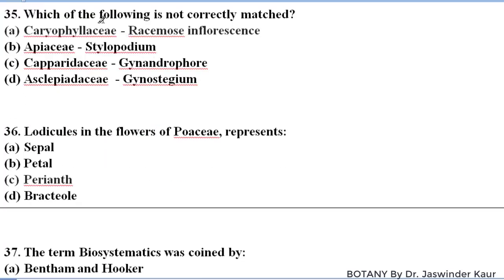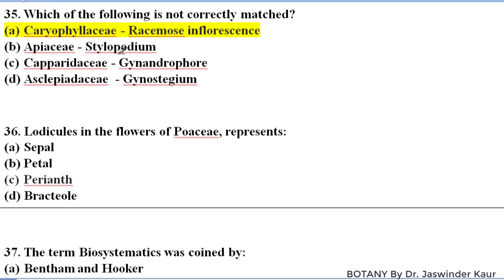Which of the following is not correctly matched? Caryophyllaceae with racemose inflorescence is incorrect, because in Caryophyllaceae cymose inflorescence is present. Apiaceae has dialopodium, in Capparidaceae gynoendrophore is present, and in Asclepiadaceae gynostegium is present — these three are correct. Only Caryophyllaceae is wrong.